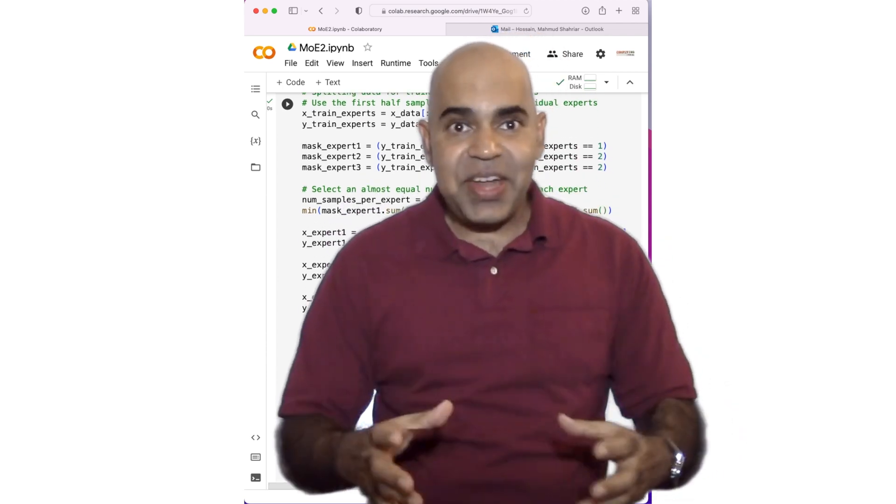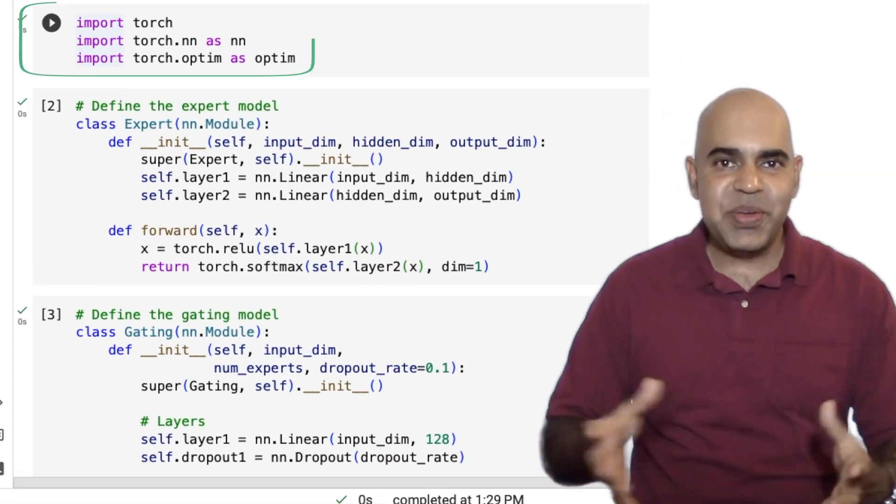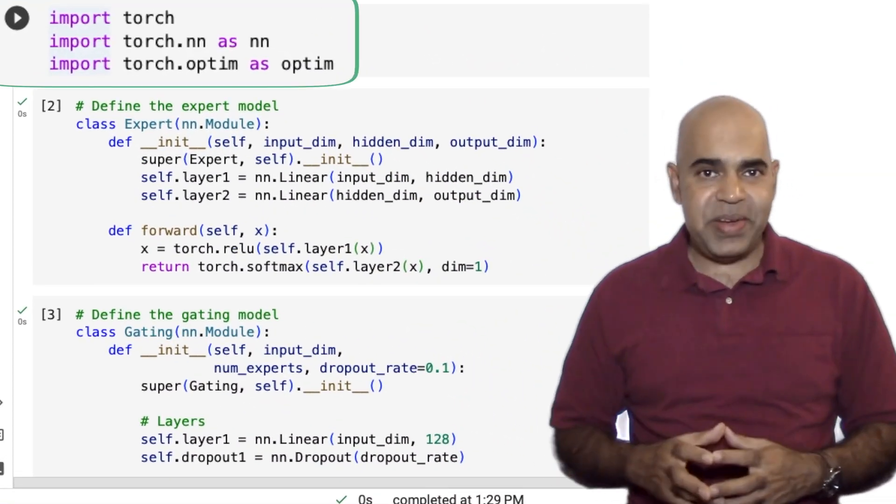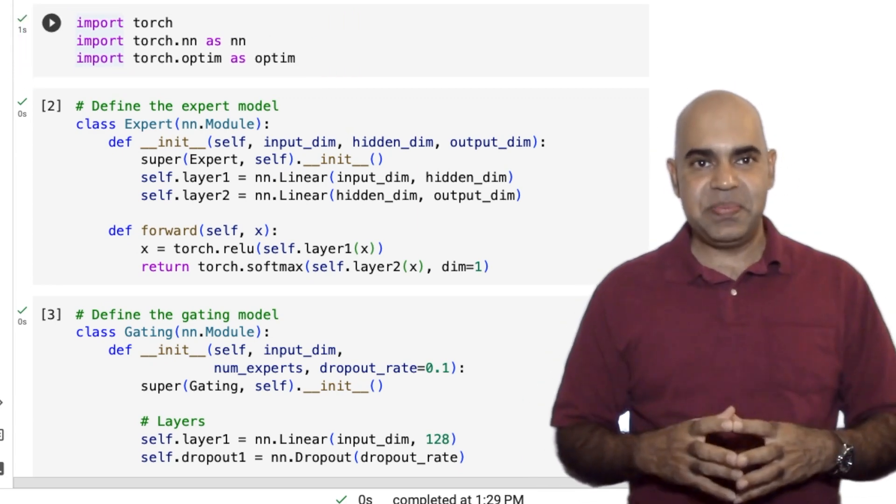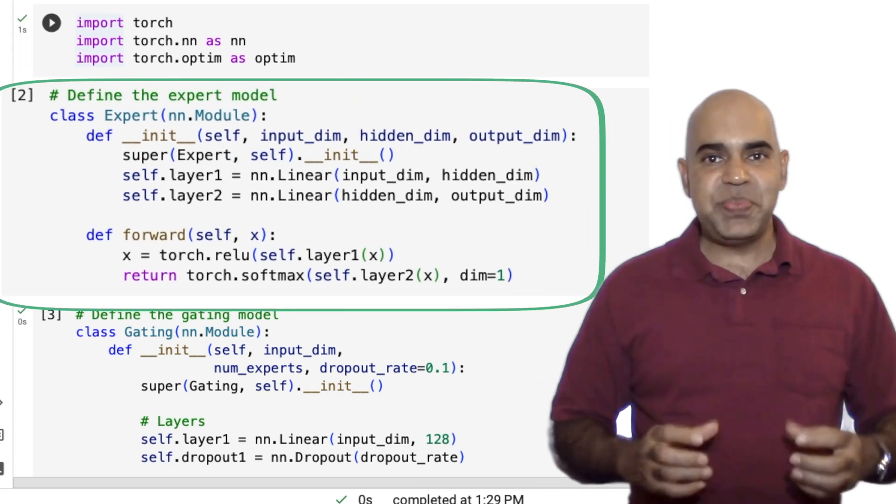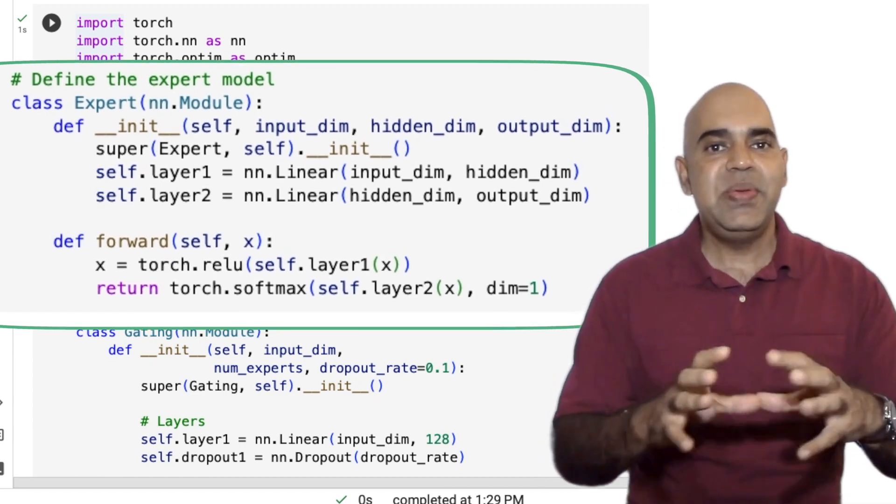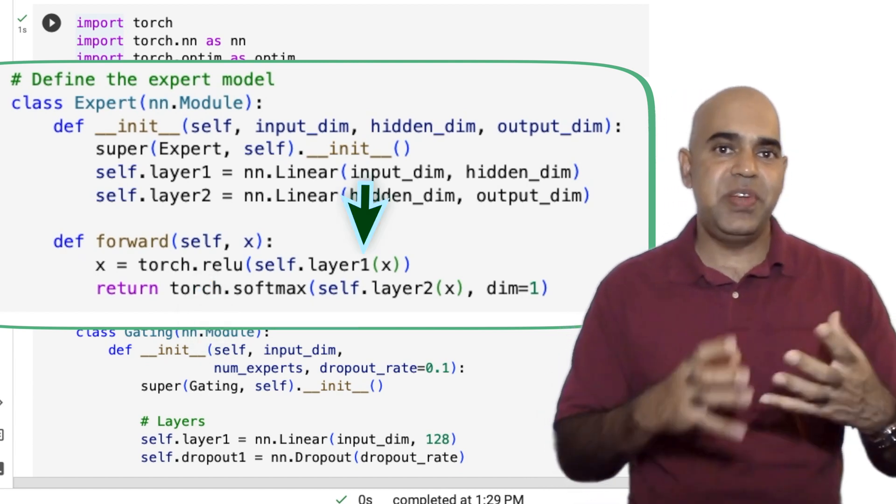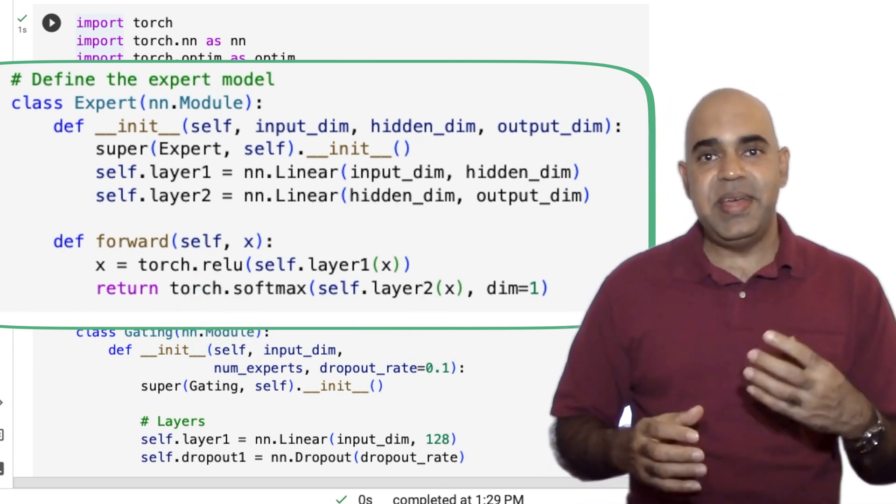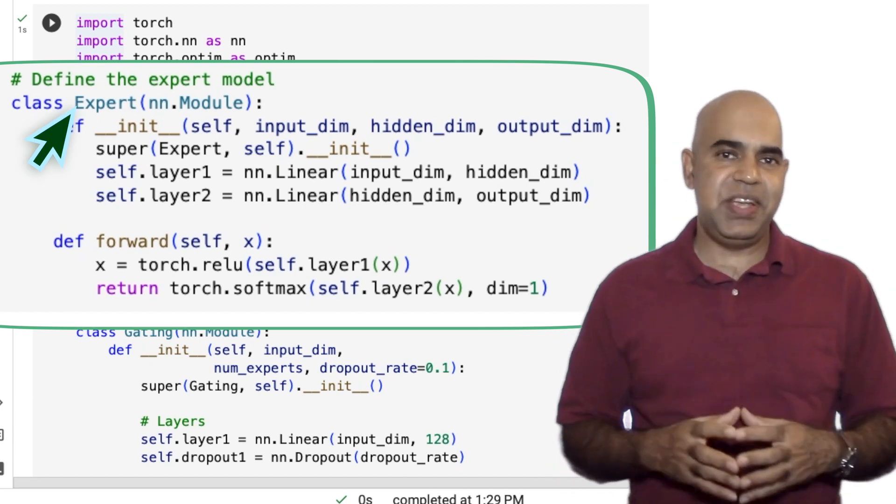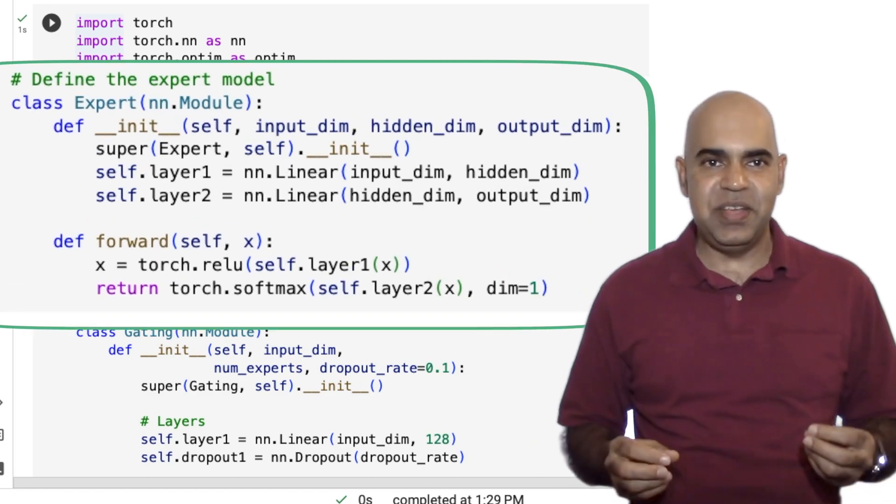Stick till the end of this video because we are now going to discuss the implementation. We start by importing the necessary libraries. We are using PyTorch to build our neural networks. Next, we define our expert model. This is a simple neural network with two layers. We use the ReLU activation function after the first layer and a softmax after the second layer. The expert is suitable for classification tasks. Later, we will create three experts using just this model definition.